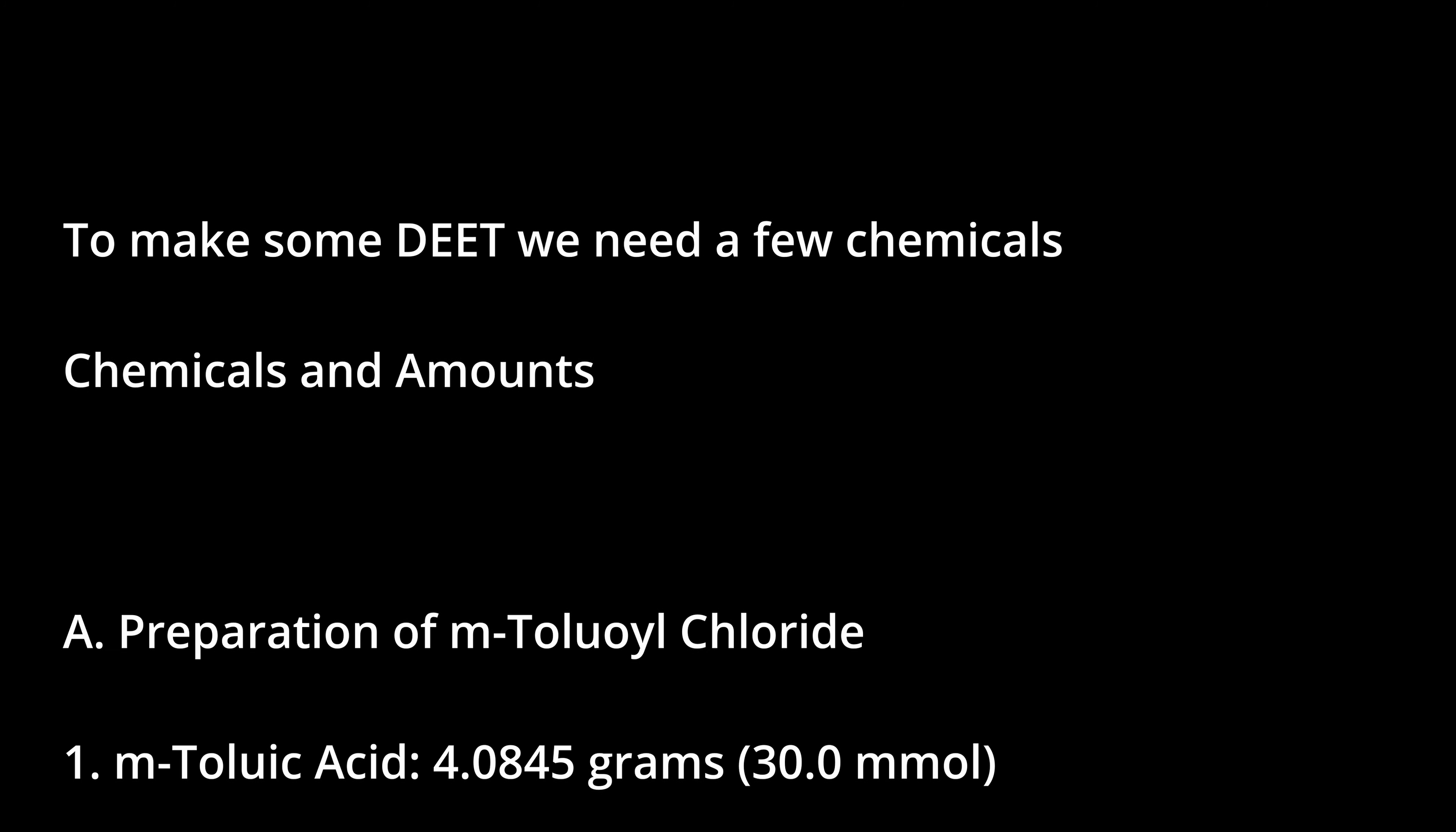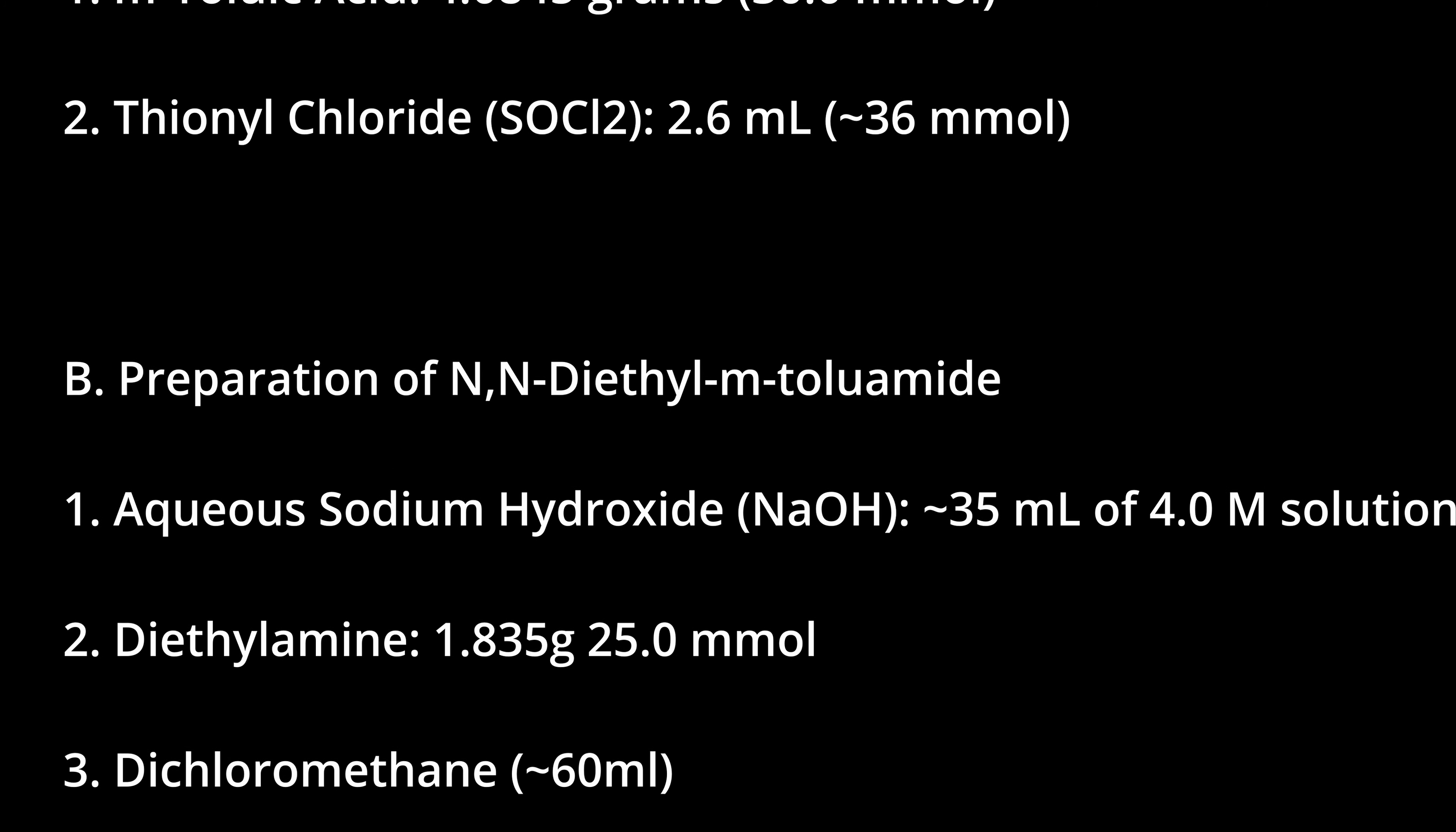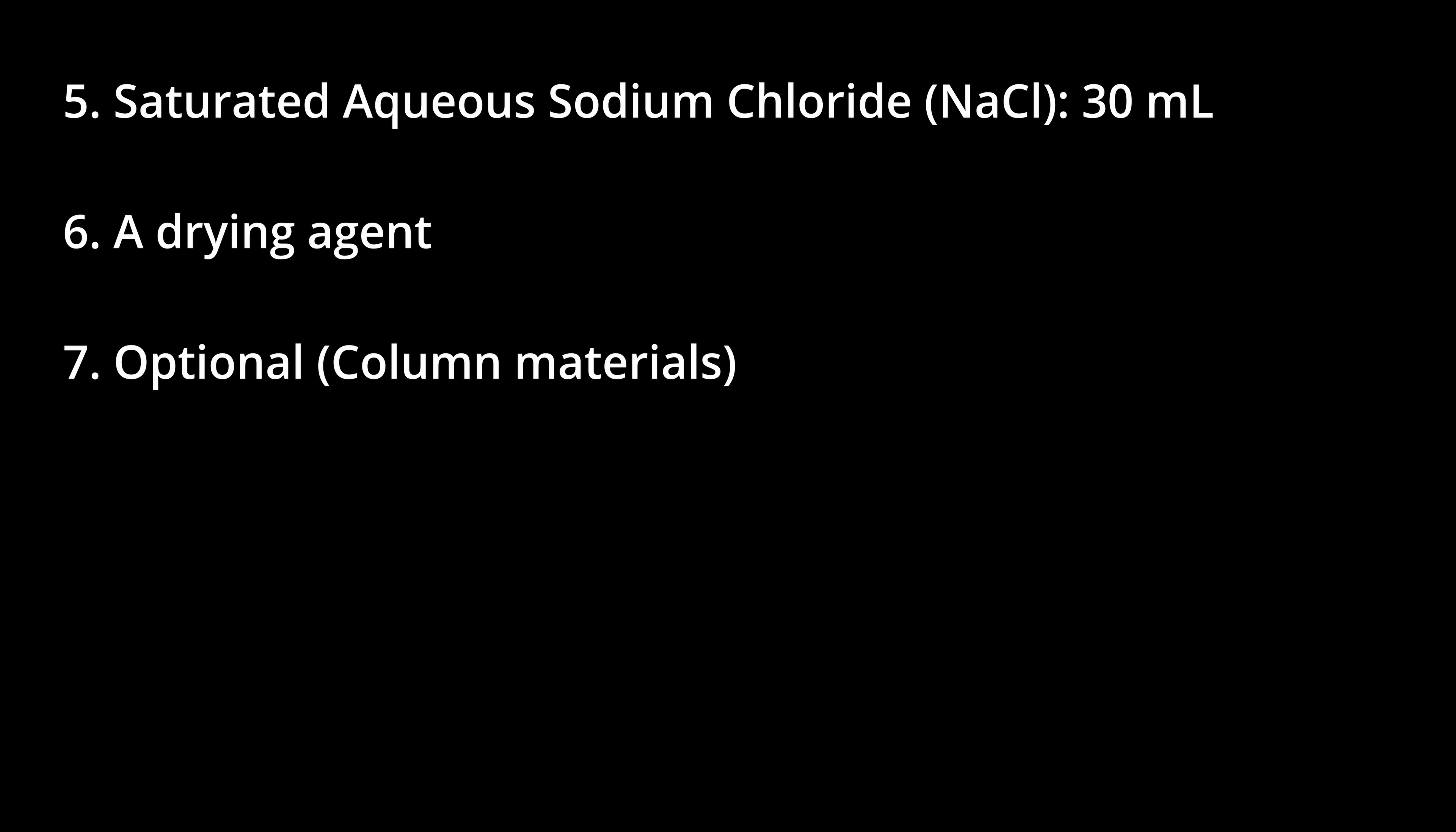To make some DEET we need a few chemicals: M-toluic acid, thionyl chloride, aqueous sodium hydroxide, diethylamine, dichloromethane, hydrochloric acid, a saturated solution of sodium chloride, a drying agent, and optional column materials.